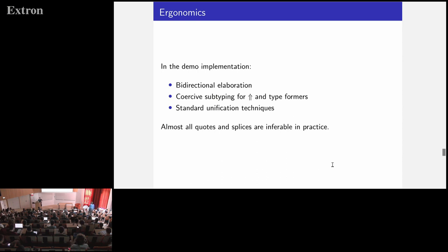Regarding ergonomics: there are many staging annotations in these code examples, but almost all quotes and splices can be inferred using bidirectional elaboration, coercive subtyping, and unification. Because the stages are tracked in the universes, we almost always know the expected stage of an expression, making bidirectional inference for staging annotations quite easy.